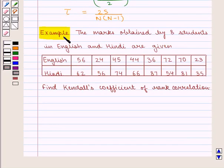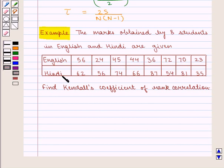Let's take an example. The marks obtained by 8 students in English and Hindi are given below. The marks in English are: 56, 24, 45, 44, 36, 72, 70, 23. And the marks in Hindi are: 62, 56, 74, 66, 87, 54, 81, 35. Find Kendall's Coefficient of Rank Correlation.